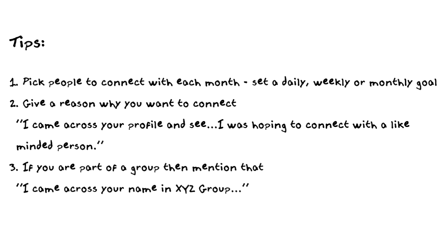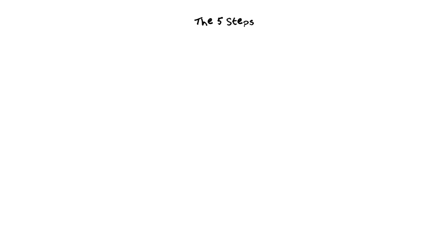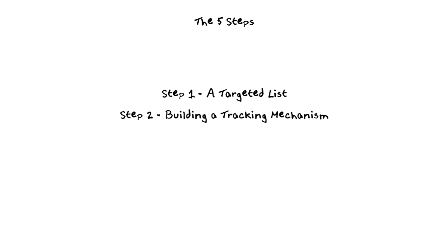Now we come to the five steps — this is a recap. Step number one is creating a targeted list of people that you want to reach out to — this is your prospect list. Step number two is building a tracking mechanism, whether that's an Excel spreadsheet, a Google Doc, or whatever works for you — make sure you have some form of tracking so you know what's going on.